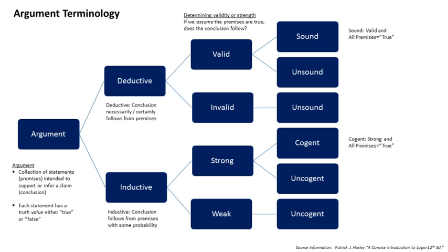Inductive arguments, by contrast, can have different degrees of logical strength. The stronger or more cogent the argument, the greater the probability that the conclusion is true; the weaker the argument, the lesser that probability. The standards for evaluating non-deductive arguments may rest on different or additional criteria than truth — for example, the persuasiveness of so-called indispensability claims in transcendental arguments, the quality of hypotheses in retroduction, or even the disclosure of new possibilities for thinking and acting.